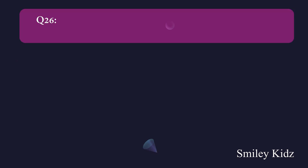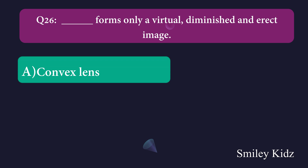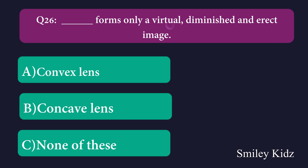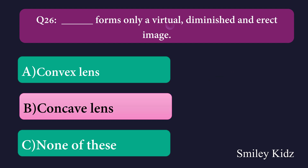Question number twenty-six: Dash forms only a virtual, diminished, and erect image. Option A: convex lens, Option B: concave lens, Option C: none of these. The right answer is concave lens. Concave lens forms only a virtual, diminished, and erect image.